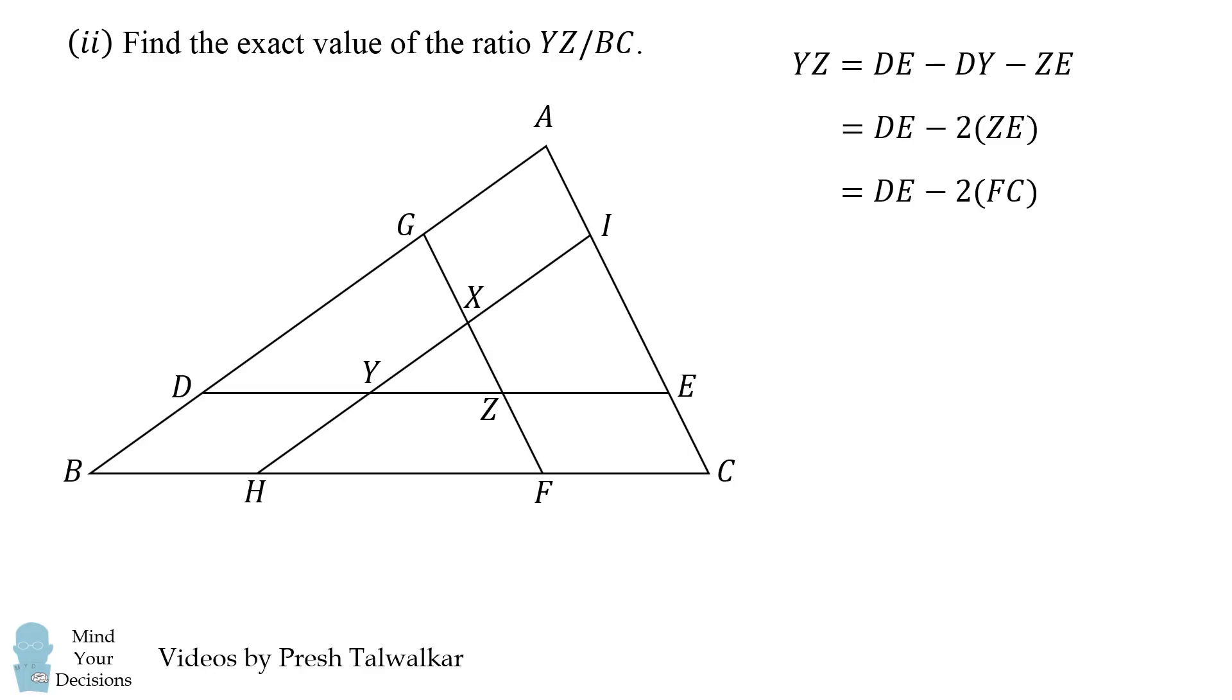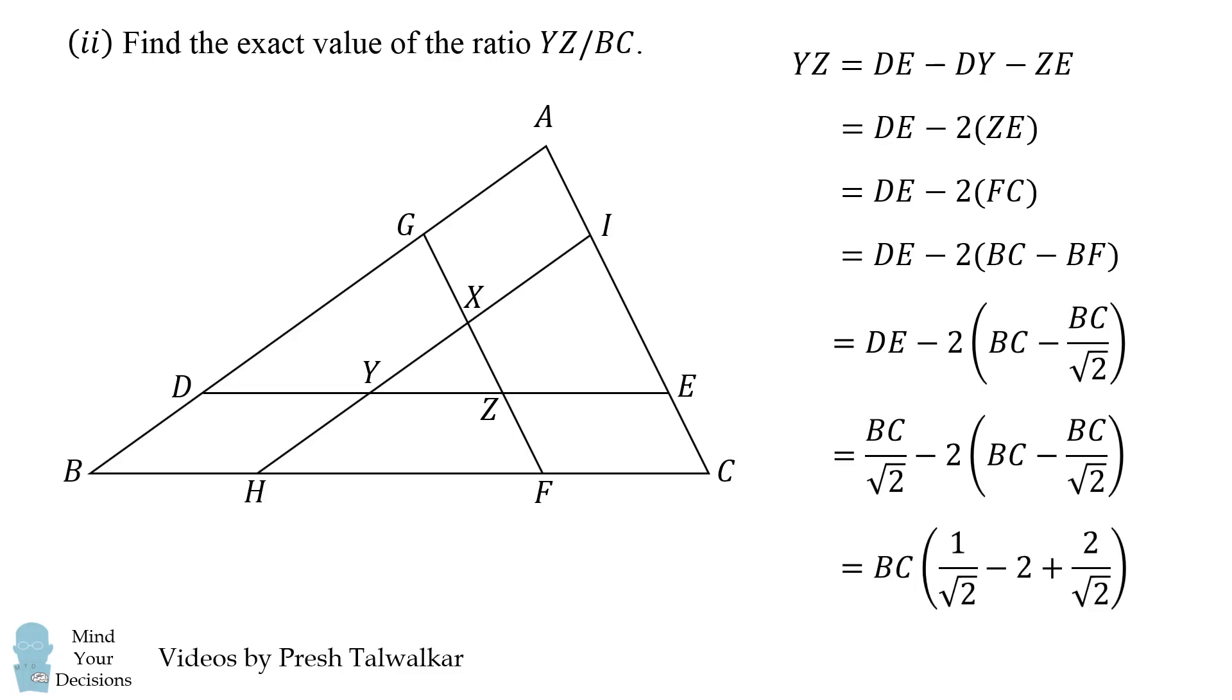Next, ZE is equal to FC because we have opposite sides of a parallelogram. We can then replace FC with BC minus BF, and we're getting closer to putting everything in terms of BC. Now recall that BF is equal to BC divided by the square root of 2, so we can substitute that in. Now all we need to do is put DE in terms of BC, but that was also given information. DE is equal to BC divided by the square root of 2.